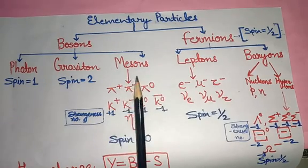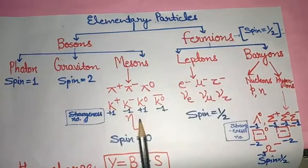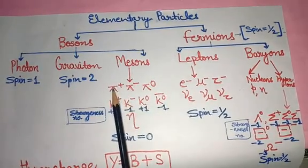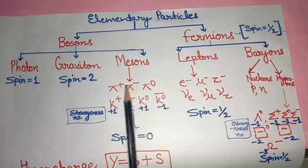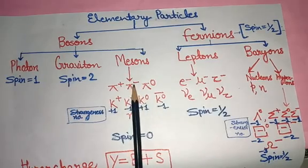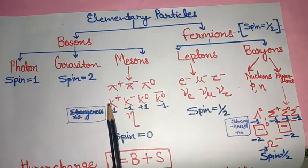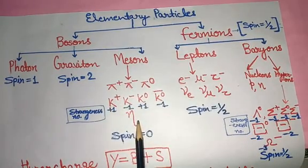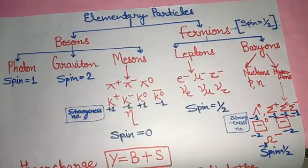The meson particles are pions, kaons, and eta. Pions have multiplicity 3 because pions consist of pi-positive, pi-negative, and pi-zero. Pi-positive has charge +1, pi-negative has charge −1, and pi-zero has charge 0. Kaons have multiplicity 4. So these are the particles under the category of mesons, and photon, graviton, and meson are all bosons.